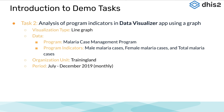The second task is to demonstrate the analysis of program indicators in a graph from the Malaria Case Management Program. In this task, we will view the number of male malaria cases, number of female malaria cases, and total number of malaria cases in a line graph over time. We will view these data at an organization unit of training land and a monthly period of July to December of 2019.